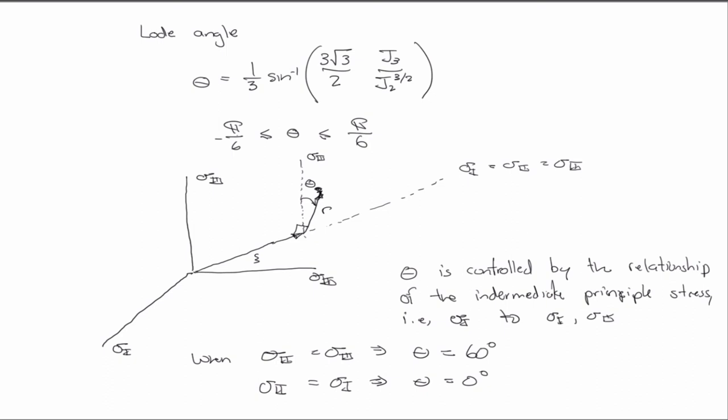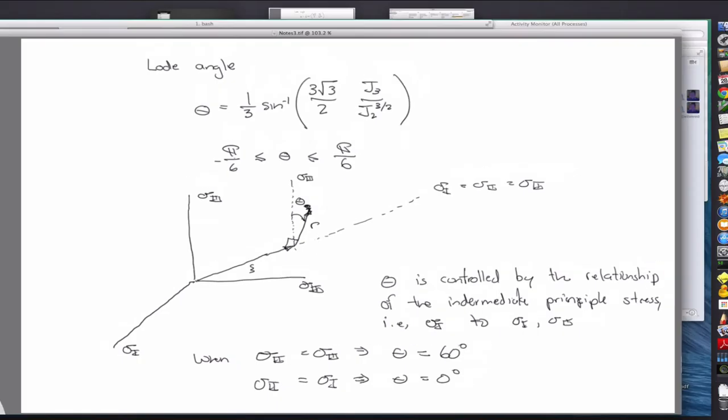So, that's the sort of pressure-dependent Tresca model, the Mohr-Coulomb model. And we can go on adding complexity on to eternity.